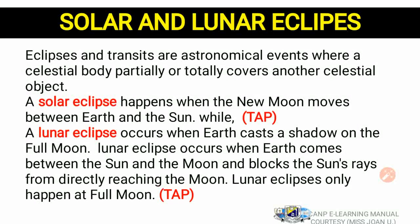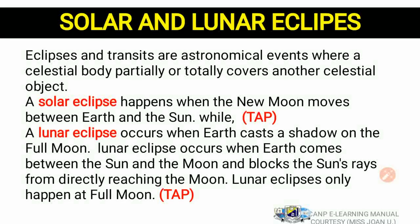The Earth blocks the light so that no light touches the Moon, and all the light comes to the Earth. It will not be very bright — we call that a lunar eclipse. Lunar eclipses only happen at full moon, meaning when the Moon is completing its 29-day movement. At new moon, it is just starting its movement.